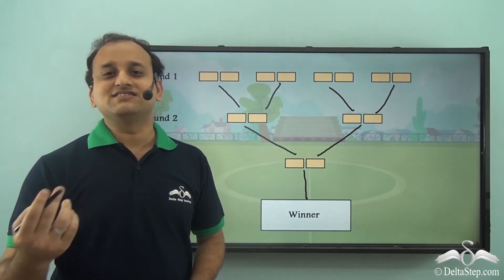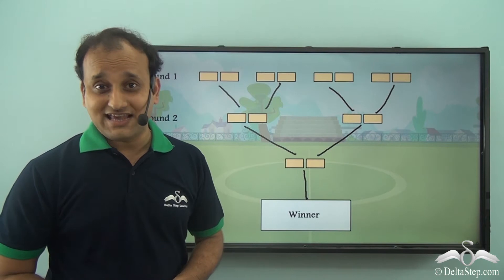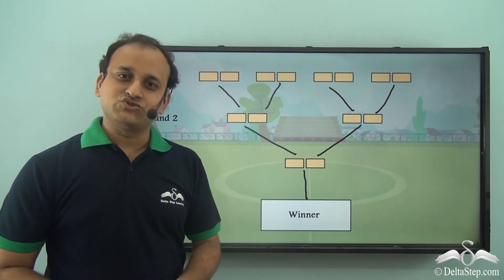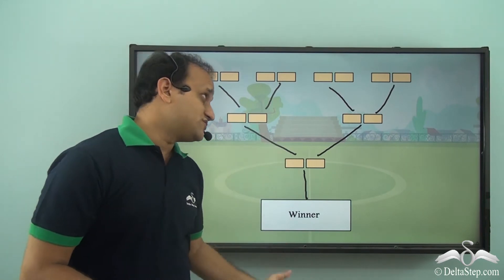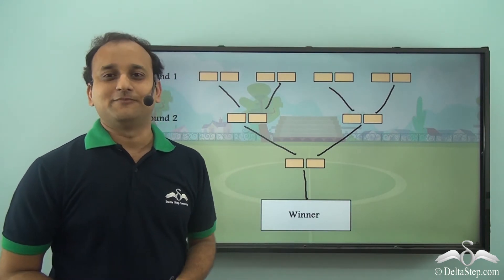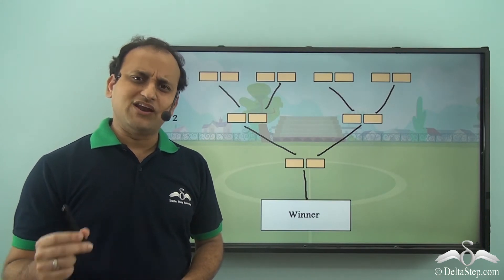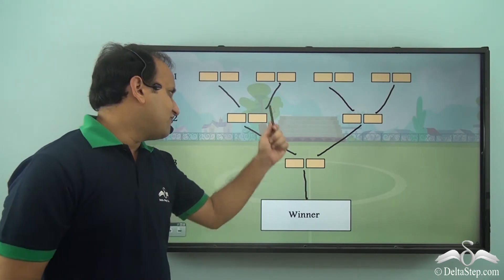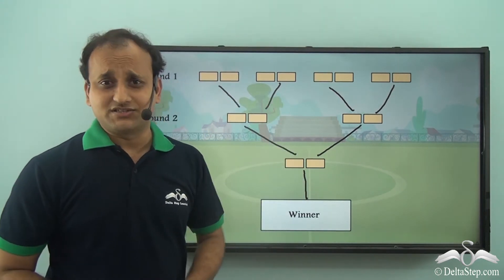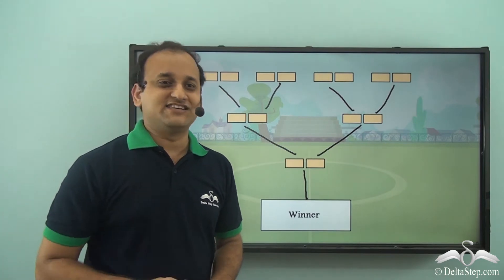He contacted his maths professor, who said it's not a big deal — he can always use logarithms to calculate the number of rounds for any number of teams. That was really interesting, but how can logarithms help identify the number of rounds for a competition? To understand that, we'll need to know logarithms better.